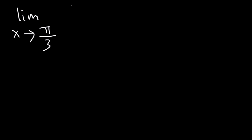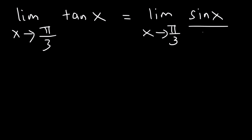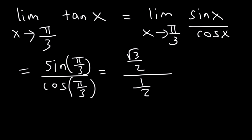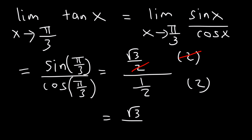What is the limit as x approaches pi over 3 of tangent x? Tangent is equivalent to sine divided by cosine, so we use direct substitution: sine of pi over 3 divided by cosine of pi over 3. Pi over 3 is 60 degrees. Sine 60 is root 3 divided by 2, and cosine 60 is 1 half. Multiplying top and bottom by 2, the halves cancel, giving us root 3 over 1, so the final answer is root 3.